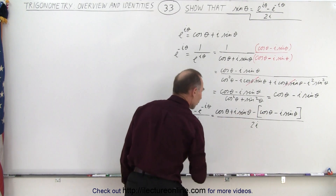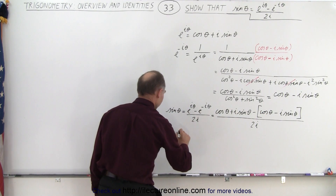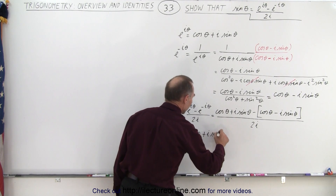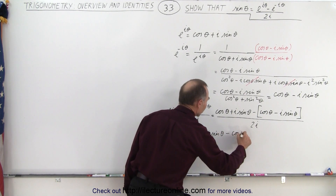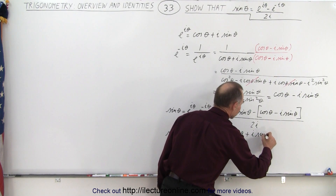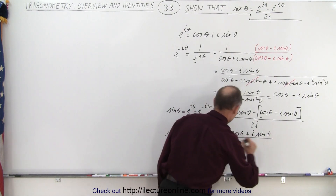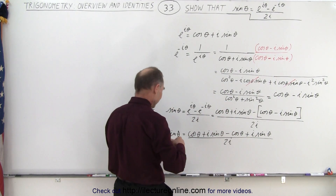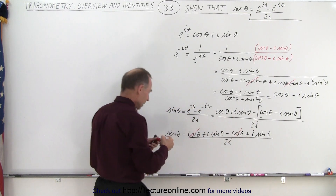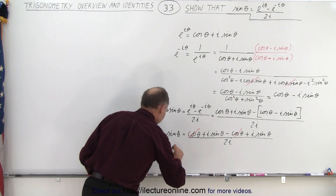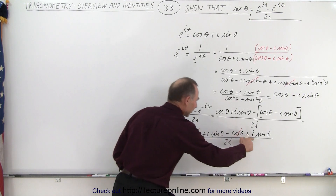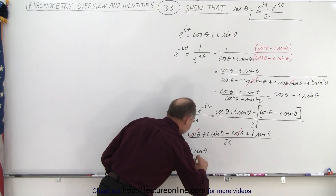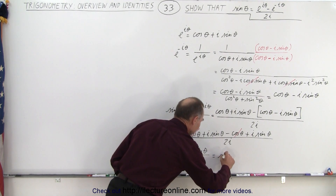So now when we expand the brackets, we get the sine of theta is equal to cosine of theta plus i sine of theta minus the cosine of theta plus i sine of theta, all divided by 2i. In the numerator, the cosine of theta minus the cosine of theta cancels out. We're left with i sine of theta plus i sine of theta, which is 2i sine of theta. Dividing that by 2i, we get sine of theta.